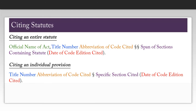You may be required to cite a statute at some point. For citing an entire statute, you would need the official name of the act, the title number, the abbreviation of the code cited, two section symbols, the span of sections containing the statute, and the date of the code edition cited.